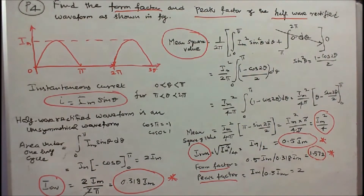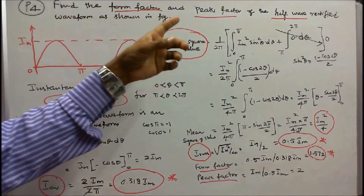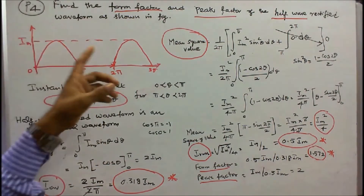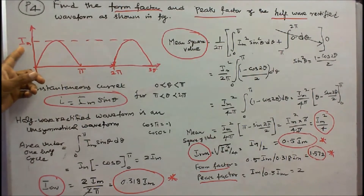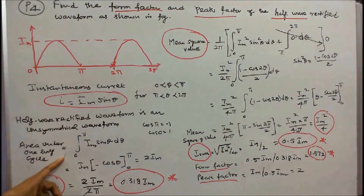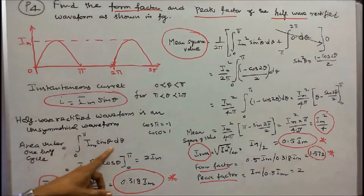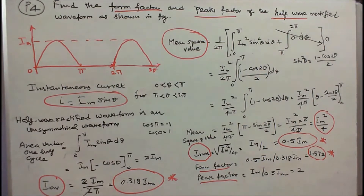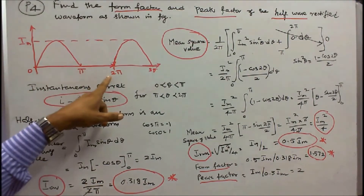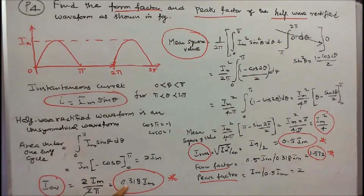Problem 4: find the form factor and peak factor of the half wave rectified waveform as shown in the figure. This is an unsymmetrical waveform. The maximum current is I_m, so instantaneous current I = I_m × sin θ. Area under one half cycle = integral from 0 to pi of I_m × sin θ dθ = 2 I_m. I_average = 2 I_m / (2 pi) = 0.318 I_m.